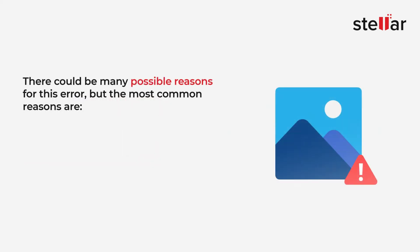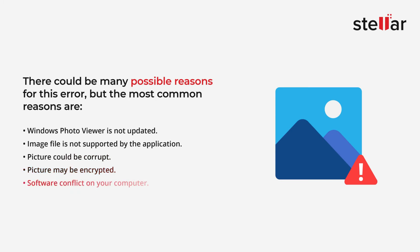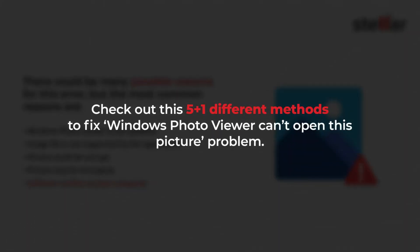There could be many possible reasons for this error, but the most common reasons are: 1. Windows Photo Viewer is not updated; 2. Image file is not supported by the application; 3. Your picture could be corrupt; 4. Your picture may be encrypted; 5. There could be a software conflict on your computer. Check out these 5 plus 1 different methods to fix the Windows Photo Viewer can't open this picture problem.